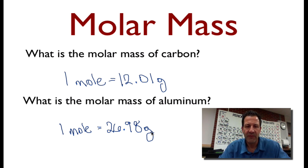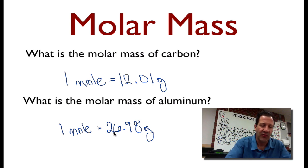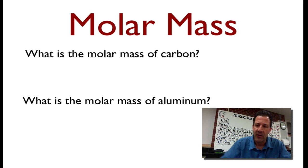If I want a mole of aluminum, if I want 6.02 times 10 to the 23rd atoms of aluminum, I just would have to take my balance and weigh out 26.98 grams of aluminum.